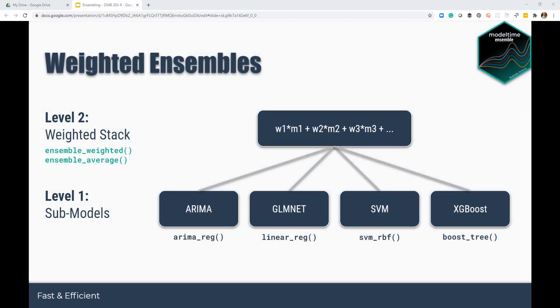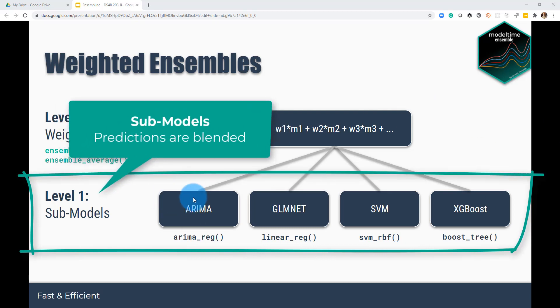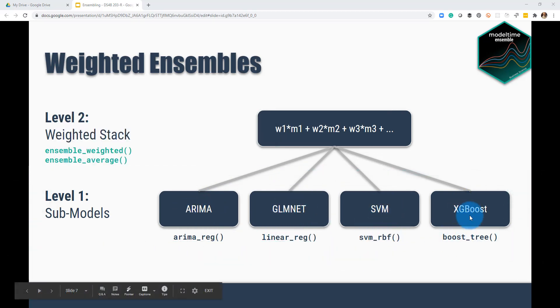The first thing I want to talk about is weighted ensembles. And this is probably the easiest thing to understand. So basically what we have are what's called sub-models, and these are the models that we've put into a model time table. So think of it like you might have an ARIMA model, a GLMnet model, a support vector machine, an XGBoost model. And you have these now in your model time table, and some of them are doing better than others. And then what you can do is you can take the predicted results and combine them in multiple different ways.